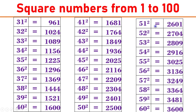51 square equals 2601. 52 square equals 2704. 53 square equals 2809. 55 square equals 3025. 56 square equals 3136.